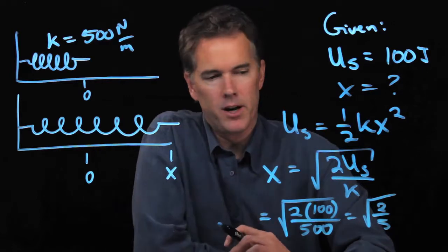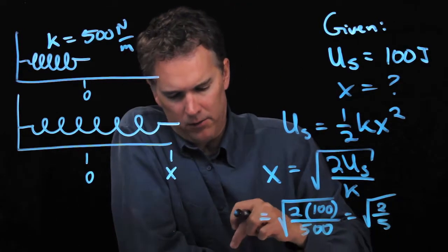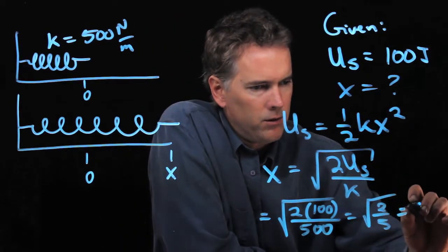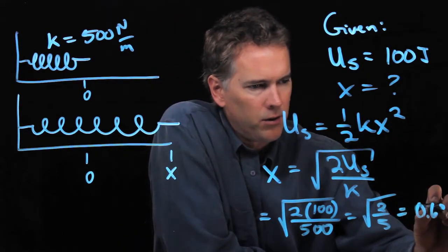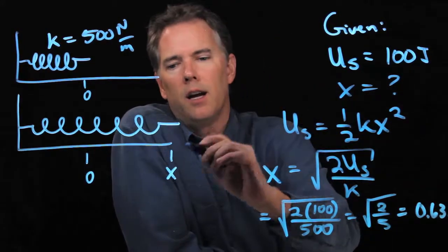Let's run it and try it. 2 divided by 5 we said was 0.4, we're gonna take the square root and we get 0.63. Remember this is SI units so this is meters.